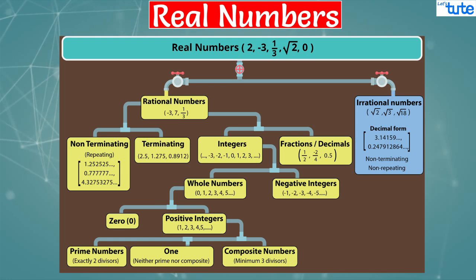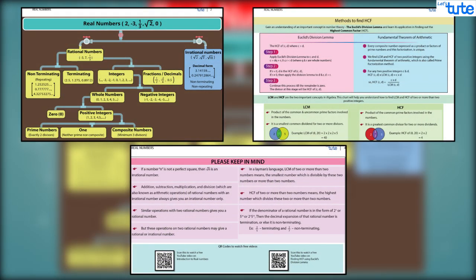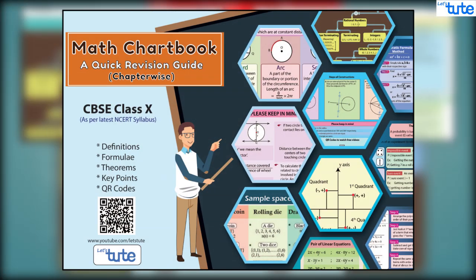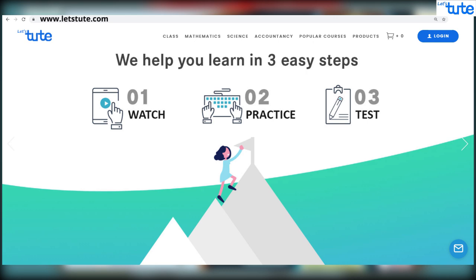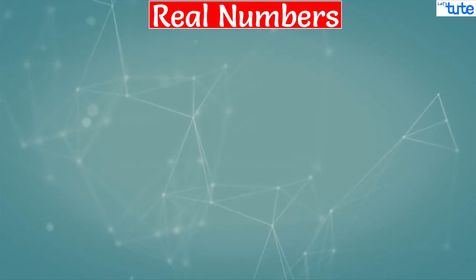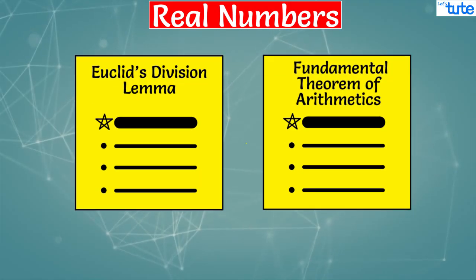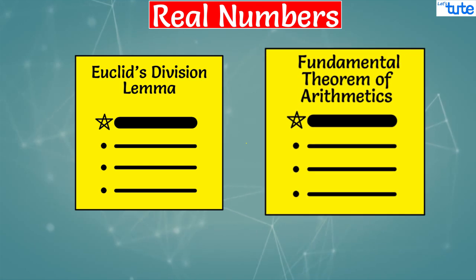You can get such tree diagram or flow chart or a quick revision guide in our math chart book. You can order it from our website www.letstute.com or from Amazon. Now, in this chapter, we are going to learn important properties of positive integers, which are Euclid's division lemma and fundamental theorem of arithmetic.